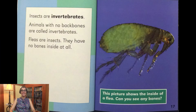Insects are invertebrates. Animals with no backbones are called invertebrates. Fleas are insects — they have no bones inside at all. This picture shows the inside of a flea. Can you see any bones?